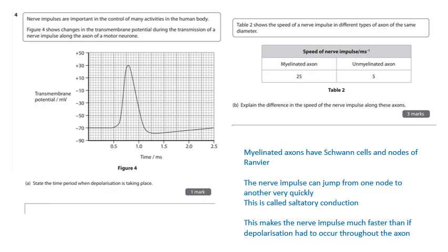Nerve impulses. Nerve impulses are important in the control of many activities in the human body. Figure shows changes in the transmembrane potential during the transmission of a nerve impulse. So, we're familiar with this graph. We've learned it. State the time period when depolarization is taking place. So, depolarization, you should look at the graph and say, well, that's from there to there. That's depolarization. And so, that is from 0.5 milliseconds to 0.8 milliseconds. That's depolarization.